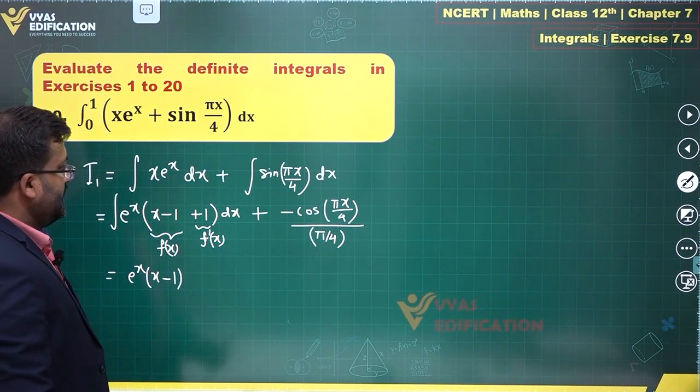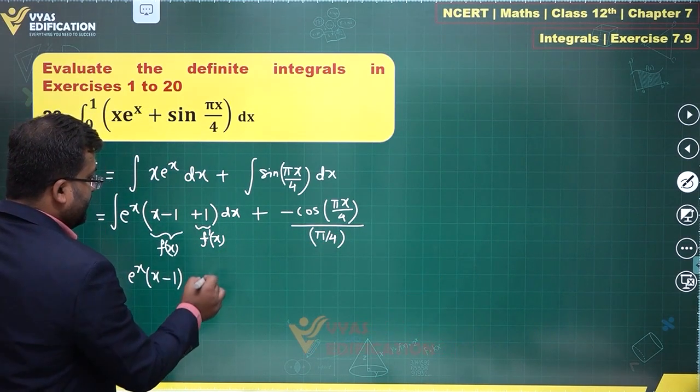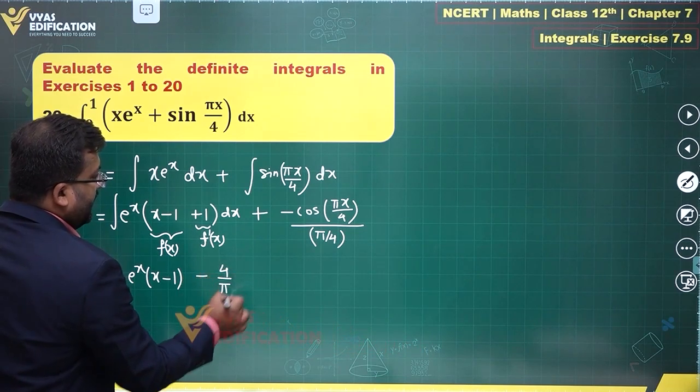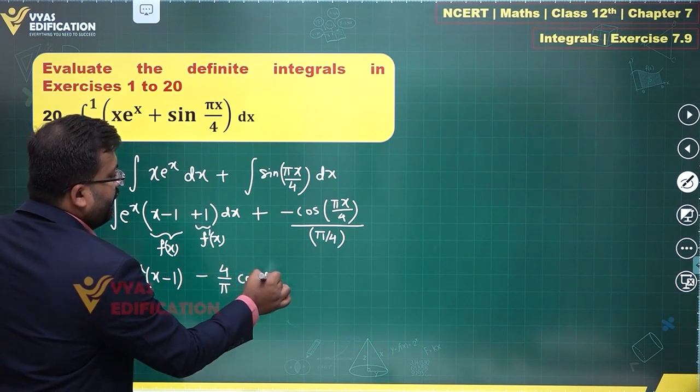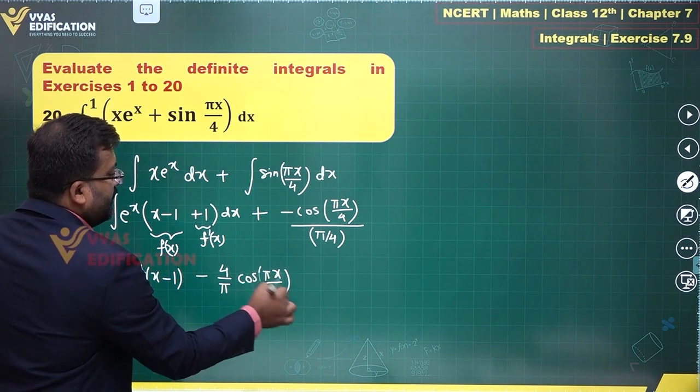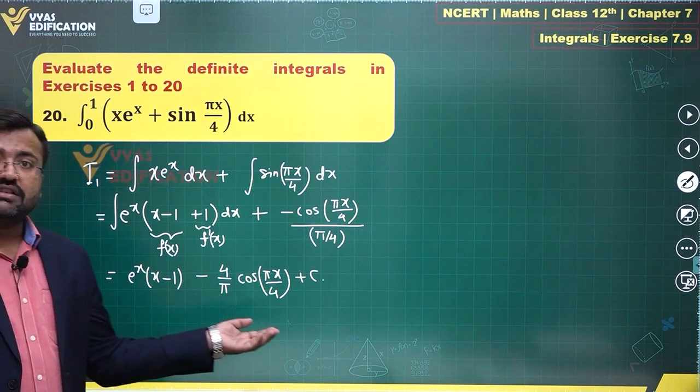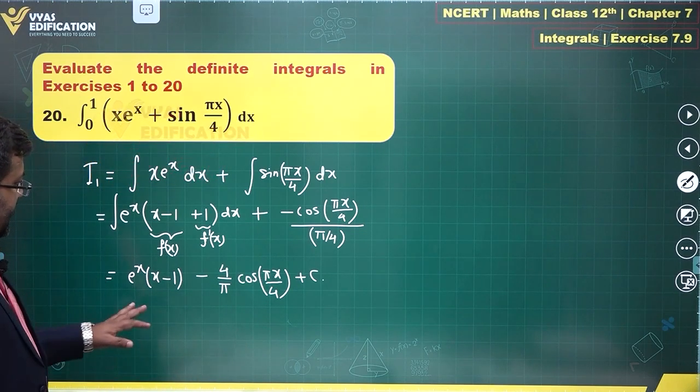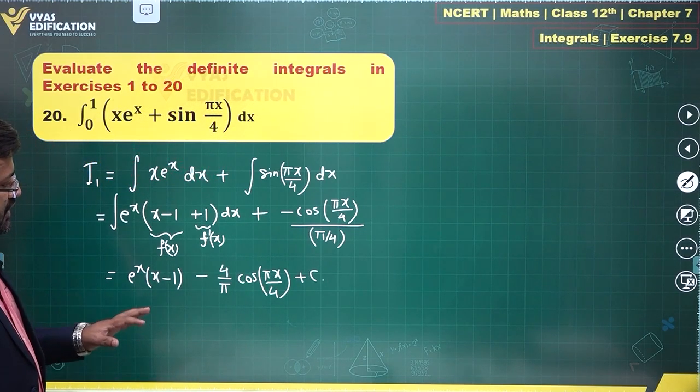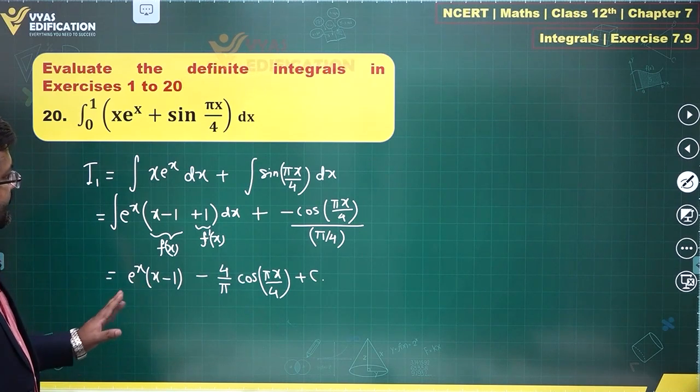This is what you'll be doing. So what does this become? This is -4/π·cos(πx/4) plus a constant of integration along with this. This is what you'll be getting. Is that okay? That looks okay - minus 4/π·cos(πx/4) + C.